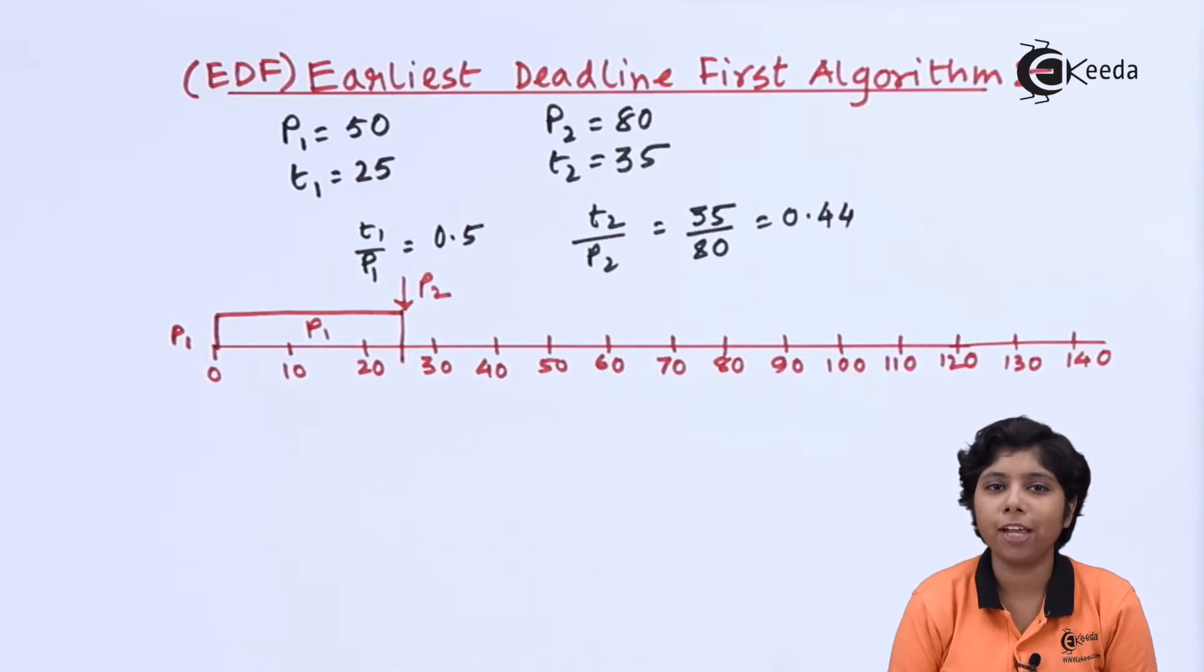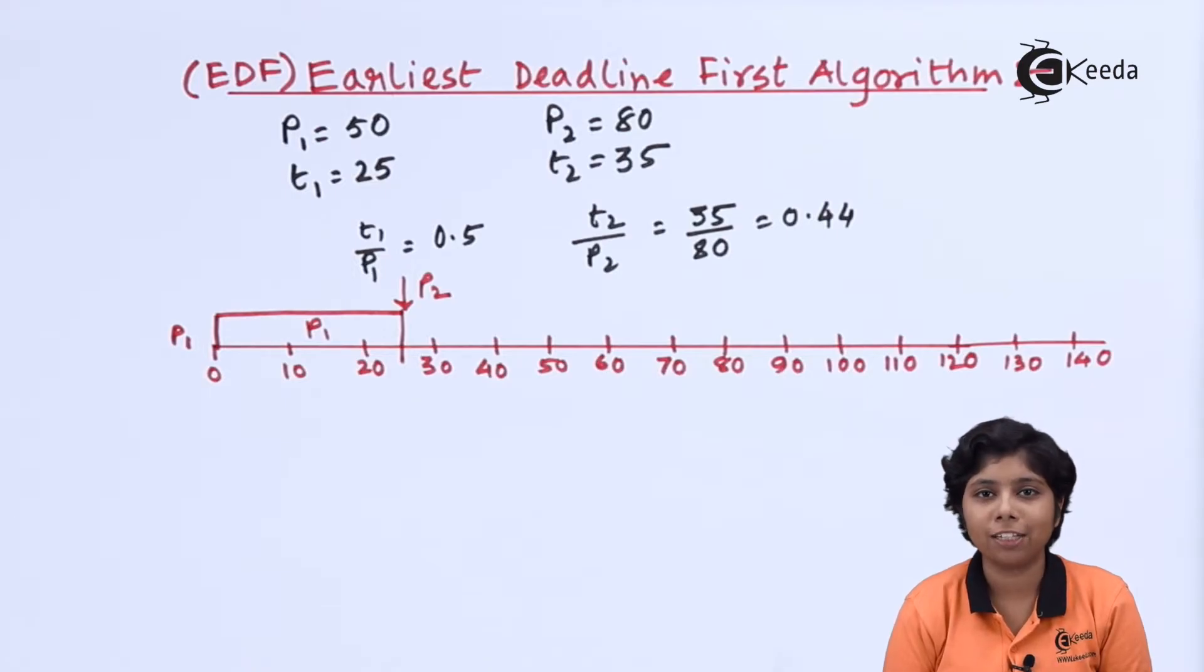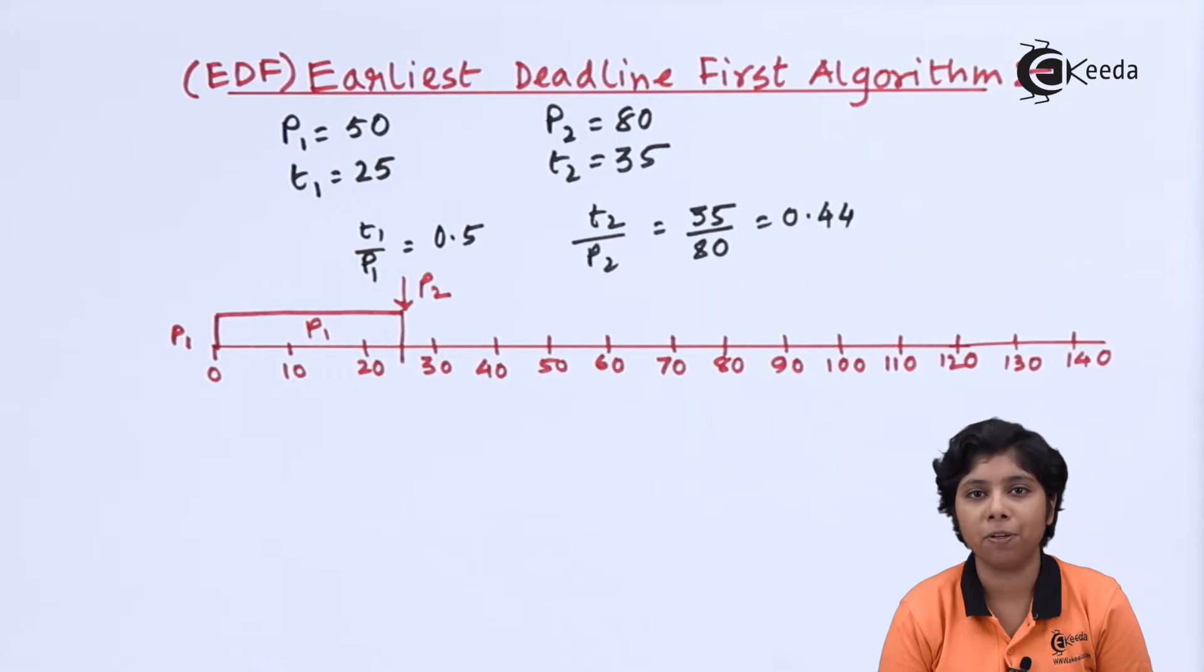Here for rate monotonic algorithm, we have chosen P1 to preempt it at the end of 50 milliseconds as the next period starts from there. But in this EDF algorithm, we will let P2 continue its execution and complete it till 60 milliseconds. As the next deadline of P1 is 100 milliseconds (50 plus 50), and the next P2 deadline is 80, P2 now has higher priority than P1. Whereas in rate monotonic algorithm, it is a fixed priority that P1 is always higher than P2. So P2 will finish its completion at 60 milliseconds.